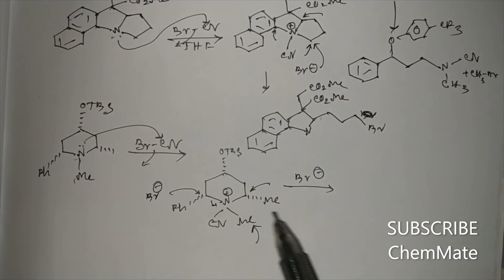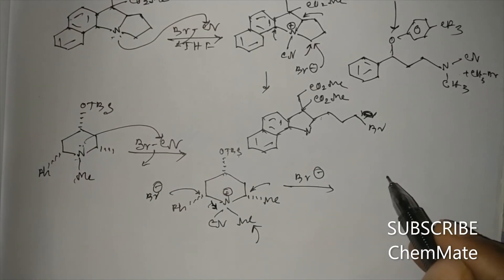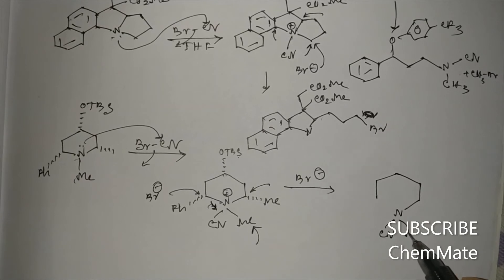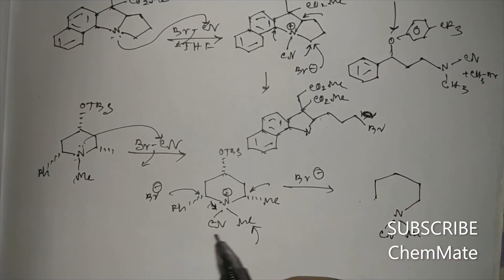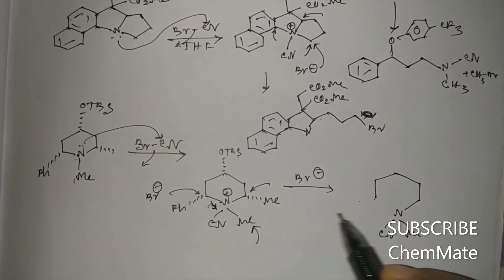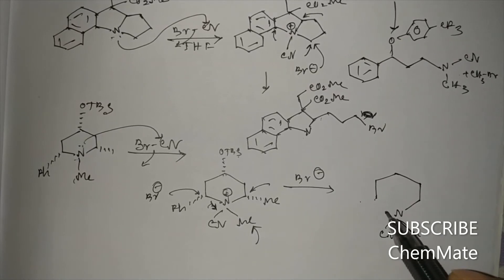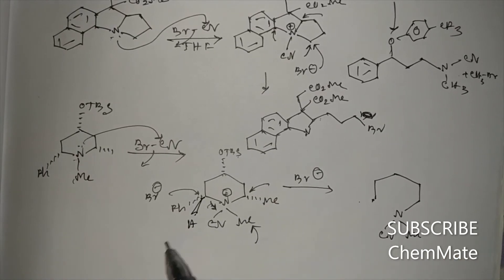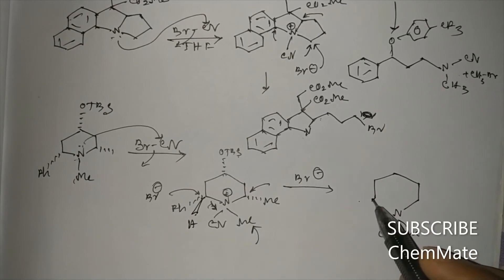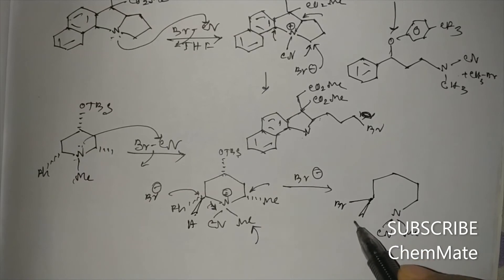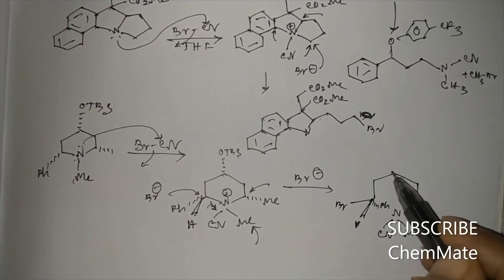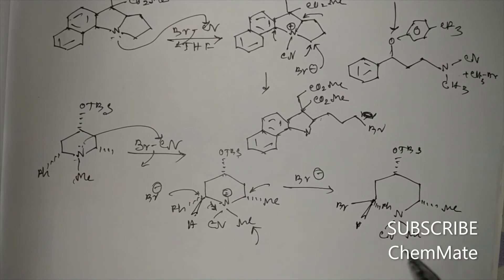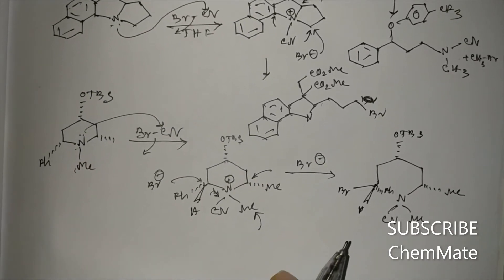The benzylic carbocation is most stable among the three, so Br minus preferentially attacks the benzylic carbon and that bond cleaves. The product is N-CN-Me with a bromide at the benzylic carbon. Since Br attacks from below the plane and hydrogen is above the plane, the stereochemistry gives the product with Br, H, H, phenyl, OTBS, and methyl group arranged accordingly.